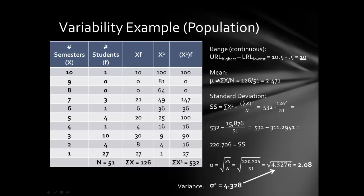For the mean, you add up all the scores and divide by how many are in the data set. With frequency distribution data, you must take frequencies into account: multiply each x value by its frequency, then sum those products. Adding all the products gives a sum of x equal to 126. Adding all the frequencies gives a population size of 51. So the mean is 126 divided by 51, which equals 2.471.